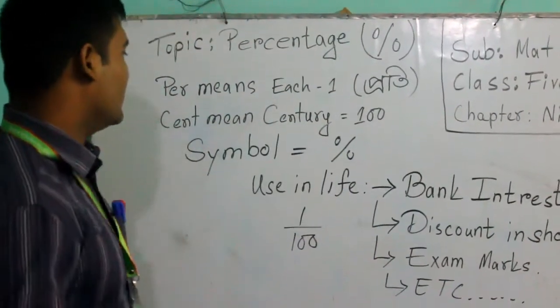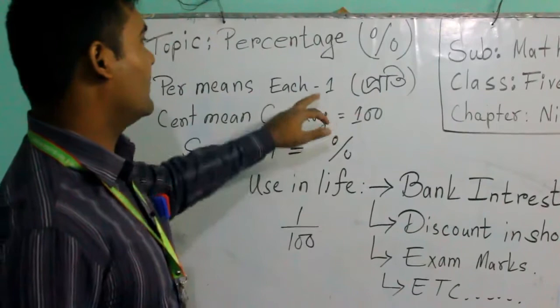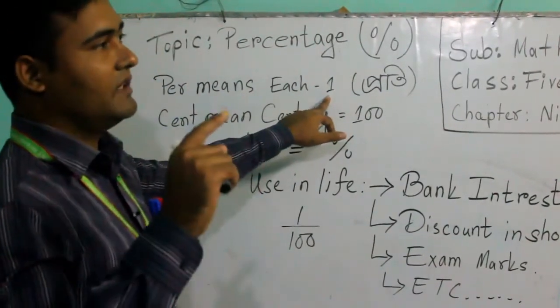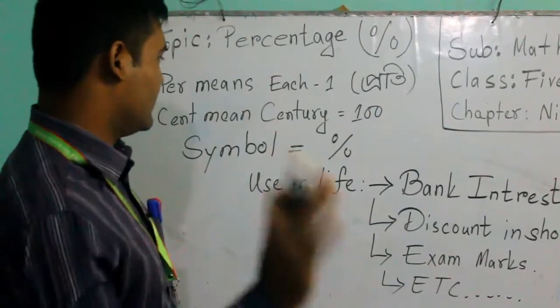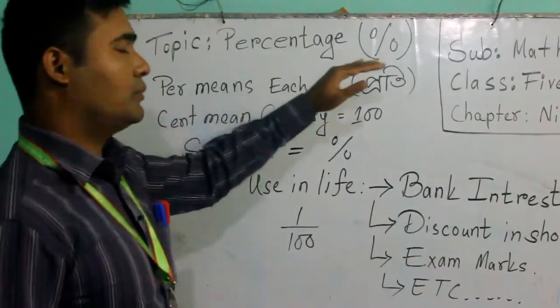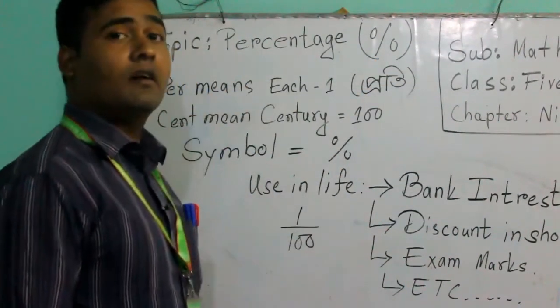So century means hundred and each means one. We got the point that one is divided by hundred - percentage always means one divided by hundred.